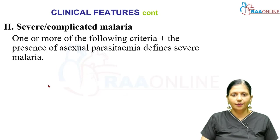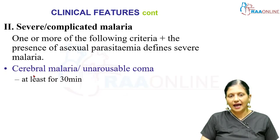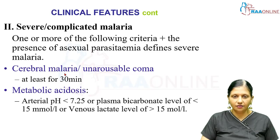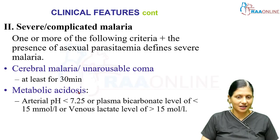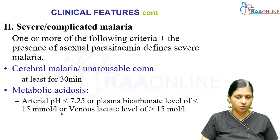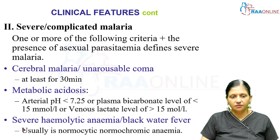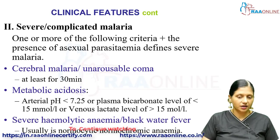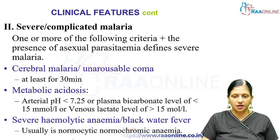In complicated or severe malaria, the patient will have fever with chills plus the presence of asexual parasitemia. Severe malaria includes cerebral malaria, documented by dizziness, drowsiness, and unrousable coma for at least 30 minutes. It also includes metabolic acidosis when arterial pH is less than 7.25, bicarbonate less than 15 mmol/L, or venous lactate more than 15 mmol/L. Hemolytic anemia with intravascular hemolysis — also called blackwater fever — can occur, and the anemia is typically normocytic normochromic.